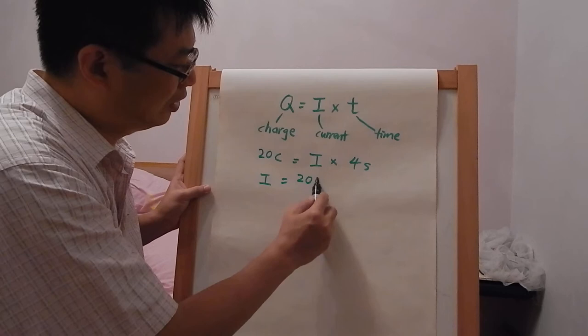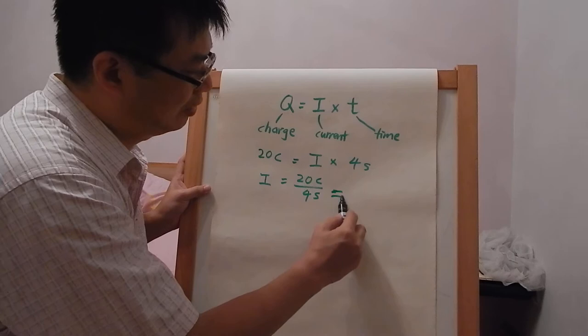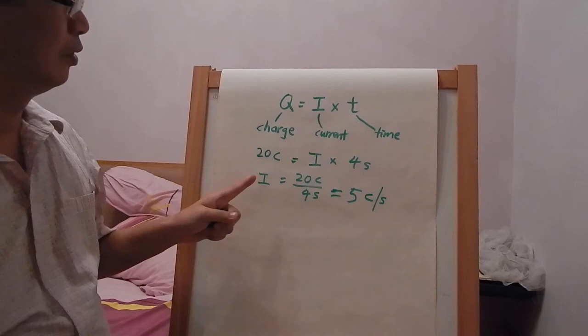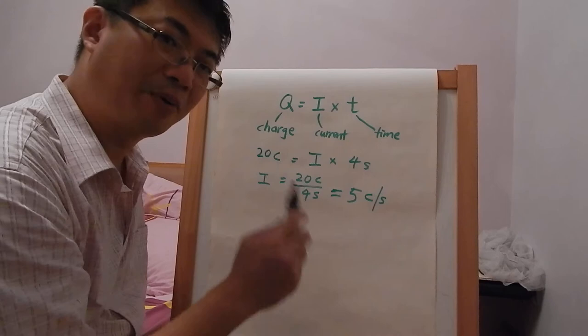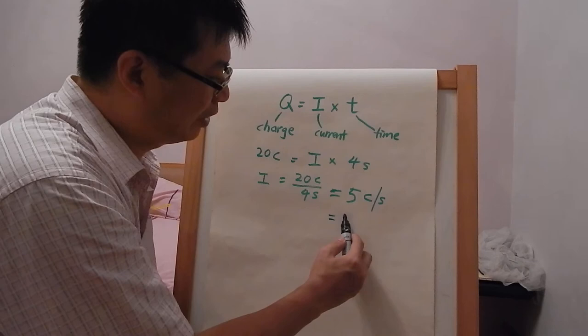That will be 5 Coulombs per second. A current of 5 Coulombs per second means that in one second, 5 Coulombs of charge has passed a point. Coulomb is the unit for charge, and we give this rate a name: 5 amperes.